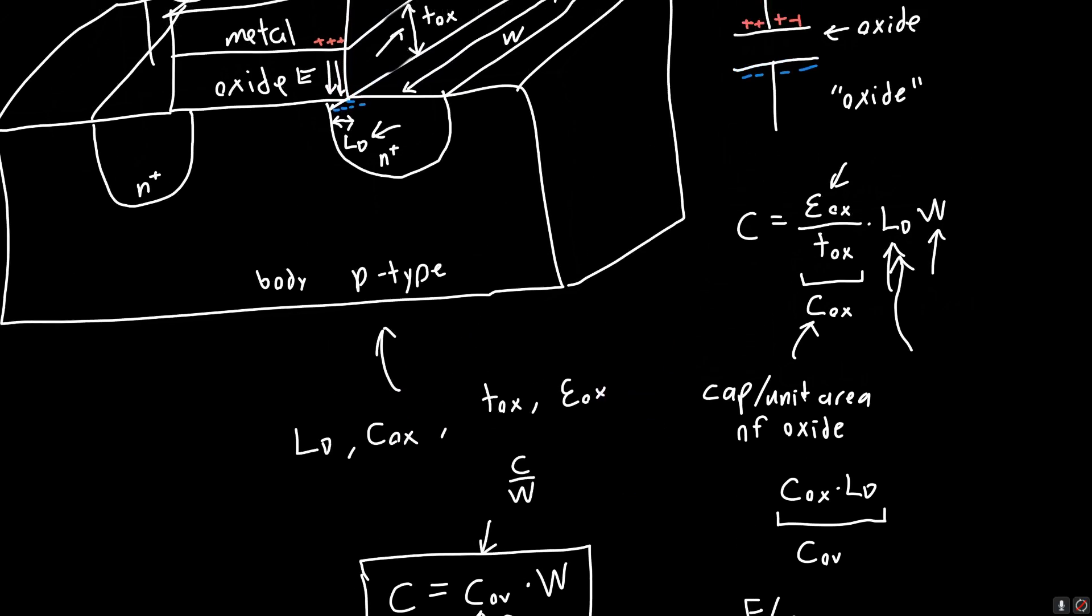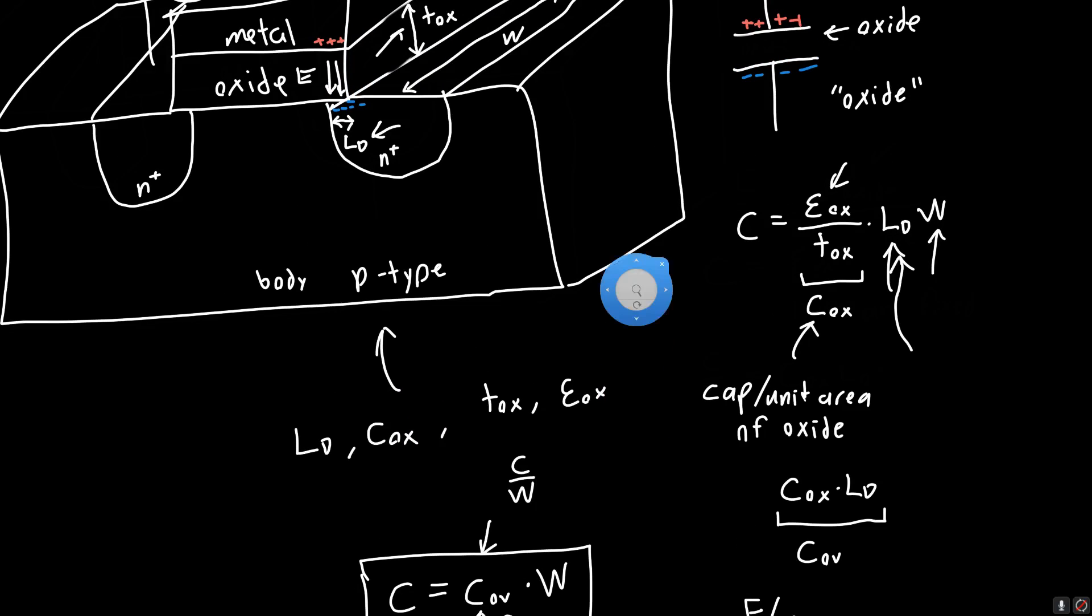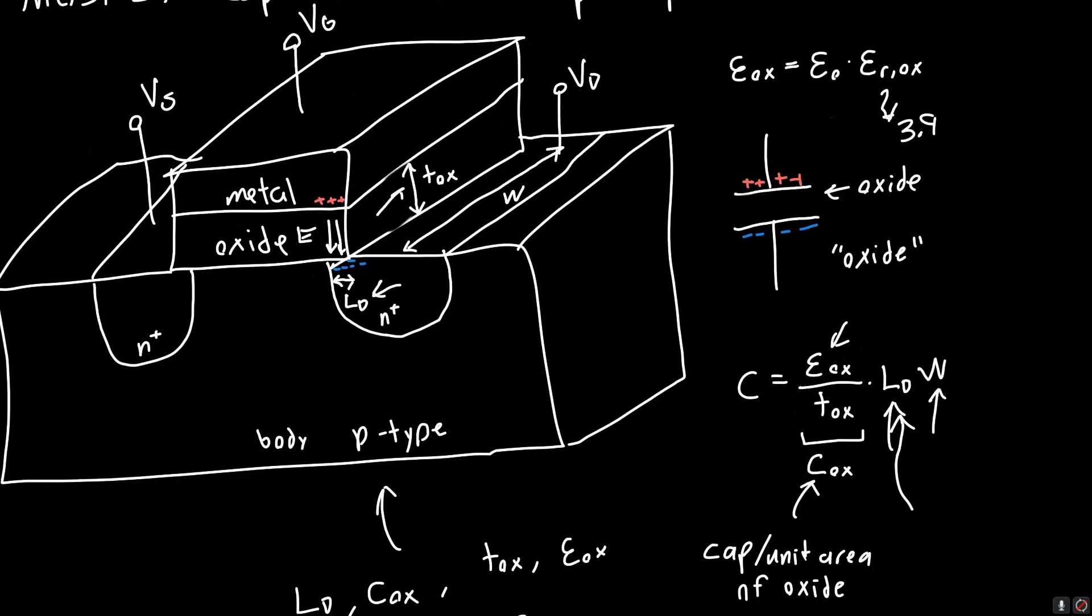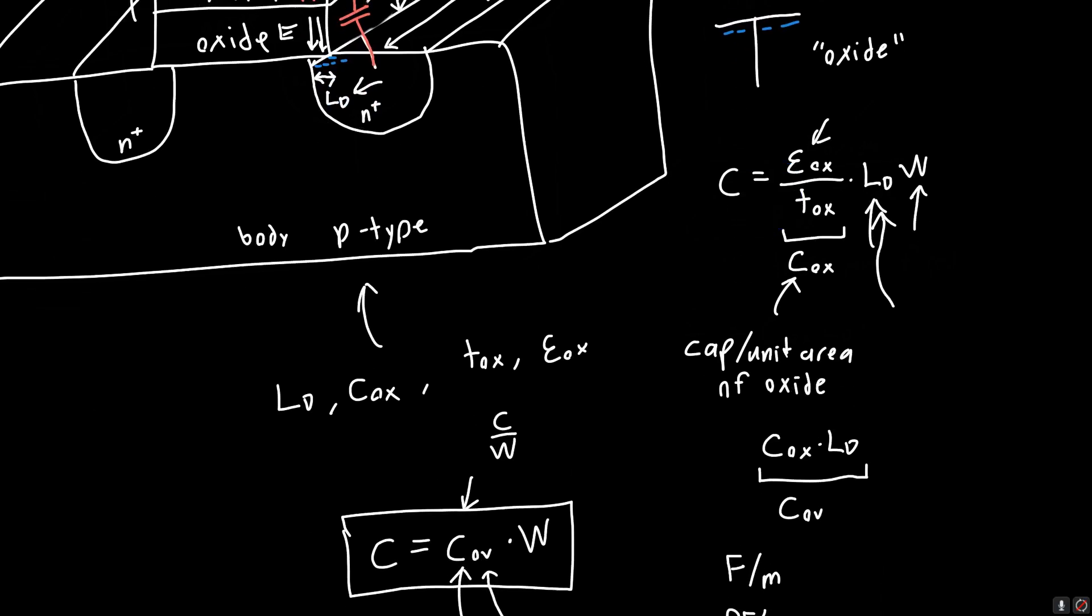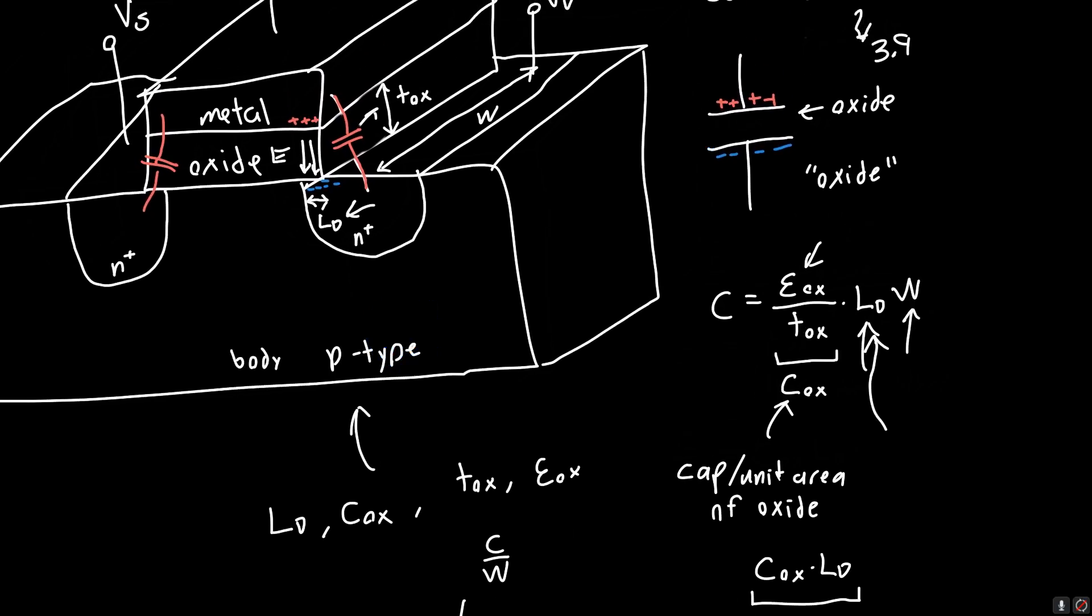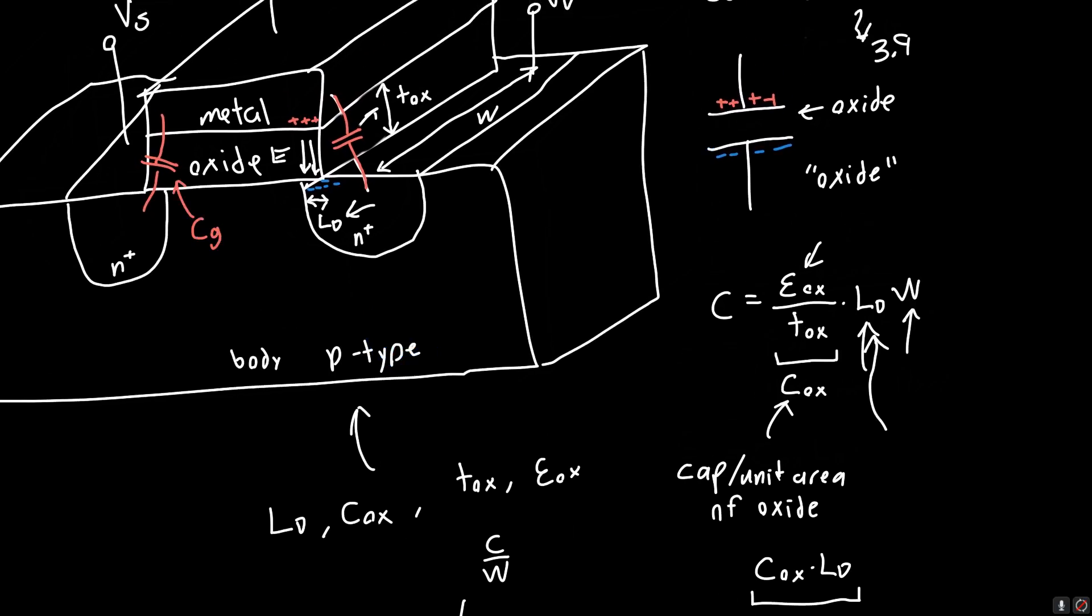And so this capacitance, this is the capacitance between the drain and the gate. This capacitance here, well, that's a little messy. Let me draw that in a different color so it's more visible. This is the capacitance between the drain and the gate. So this is CGD.